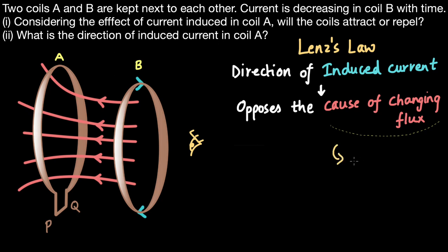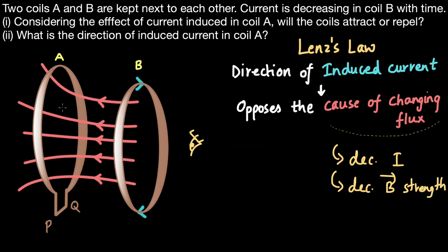There is decreasing current, which means there will be decreasing strength of the magnetic field. We can see that these magnetic field lines are passing through coil A, so there is some flux linked with it. If the strength of these magnetic field lines is decreasing, then the flux passing through coil A must also be decreasing. So the cause of changing flux is the decreasing current, which leads to a decrease in flux through coil A.